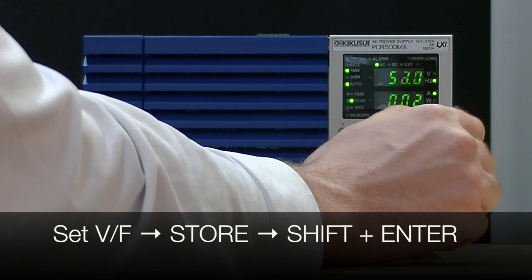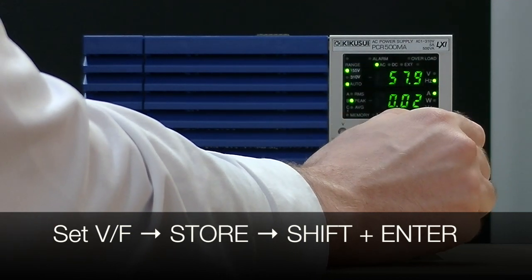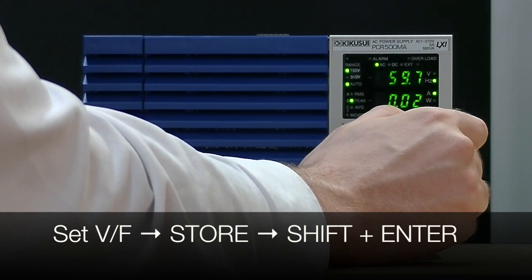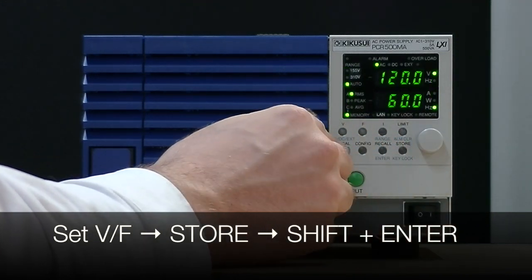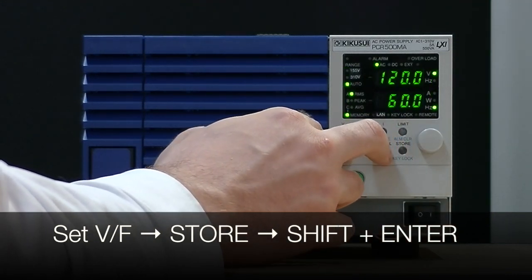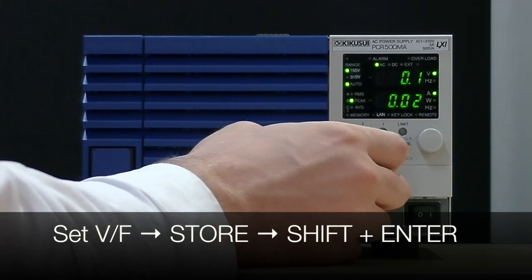All you have to do is set your voltage and frequency to the desired values, press store to select the A, B, or C memory slot, then press shift and enter to save it to the desired slot.